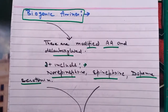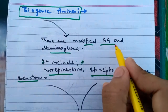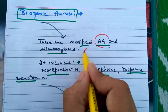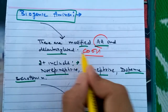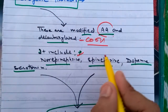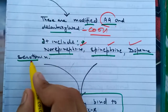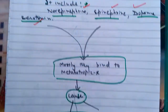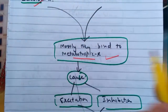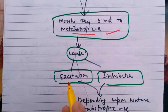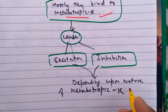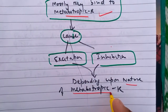Biogenic amines are modified amino acids in which the carboxylic acid (COOH) group is removed. They include norepinephrine, epinephrine, dopamine, and serotonin. They mostly bind to metabotropic receptors, and when they bind they cause excitation or inhibition depending upon the type and nature of the metabotropic receptor.